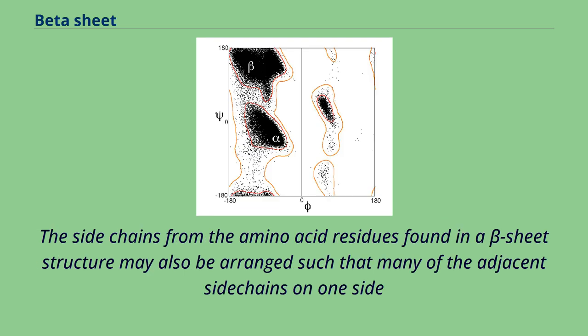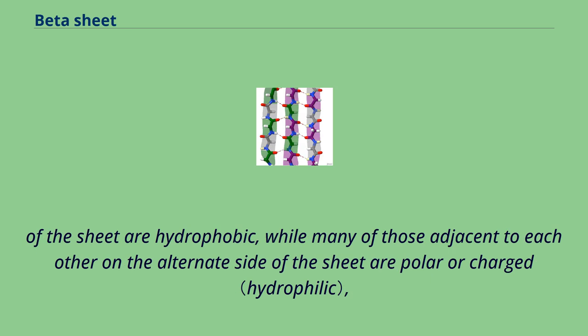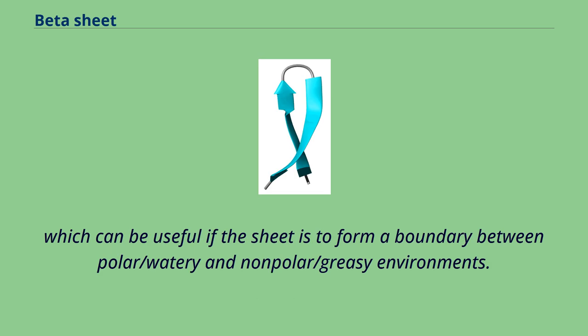The side chains from the amino acid residues found in a beta sheet structure may also be arranged such that many of the adjacent side chains on one side of the sheet are hydrophobic, while many of those adjacent to each other on the alternate side of the sheet are polar or charged, which can be useful if the sheet is to form a boundary between polar/watery and non-polar/greasy environments.